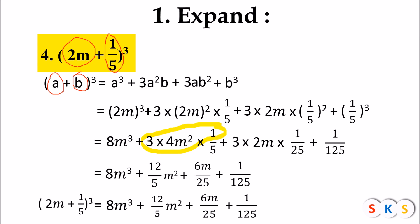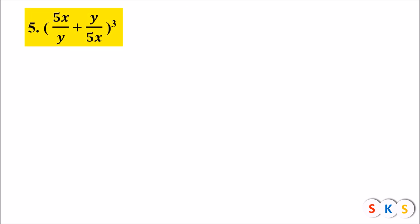Therefore, (2m + 1/5)³ = 8m³ + 12m²/5 + 6m/25 + 1/125. Now question number 5: (5x/y + y/5x) the whole cube.